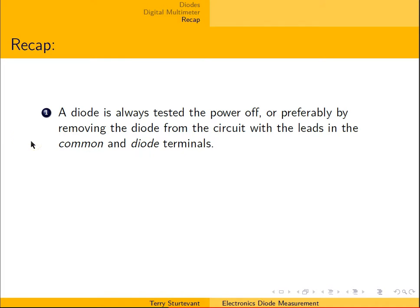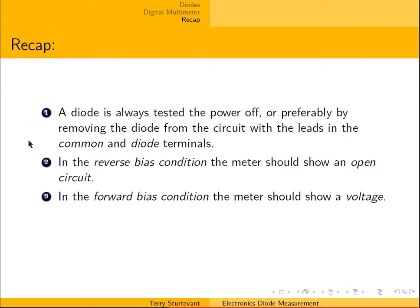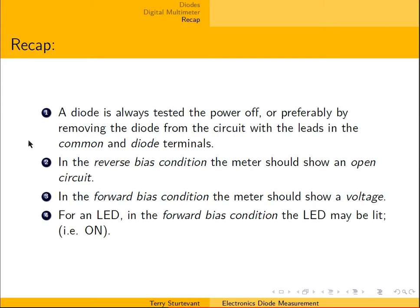To sum up: a diode is always tested with the power off, preferably by removing it from the circuit, with the leads in the common and diode terminals of the meter. In the reverse bias condition, the meter should show an open circuit. In the forward bias condition, the meter should show a voltage. And for an LED in the forward bias condition, the LED may be lit so that you can see that it's on.